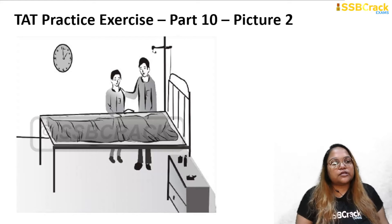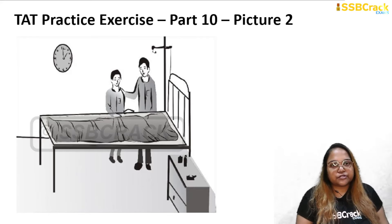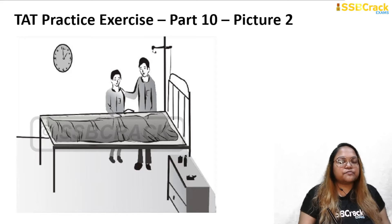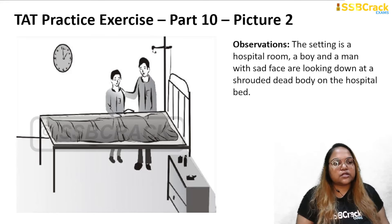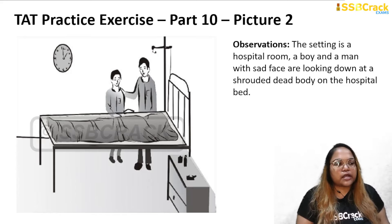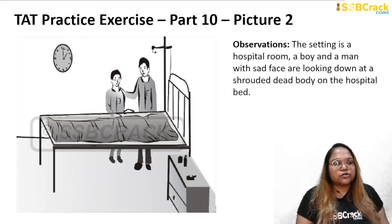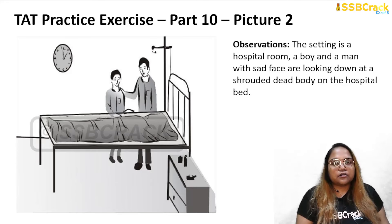Next we are going to our next picture. You can look at this picture for 30 seconds and note down your observations. After looking at it, what we can observe is that it's a hospital scene. The most notable element is a shrouded dead body on the hospital bed. Two male persons are standing — one is a bit older than the other — and both are looking sadly at the dead body.